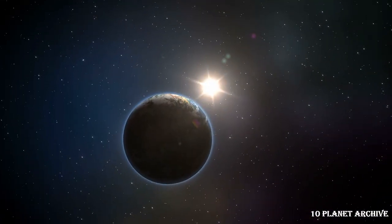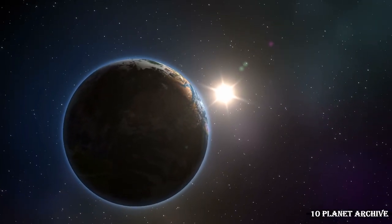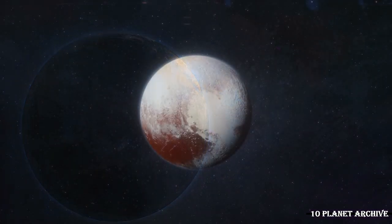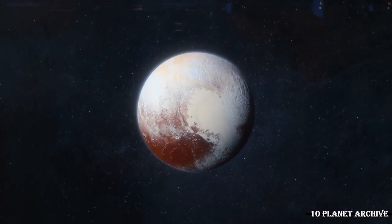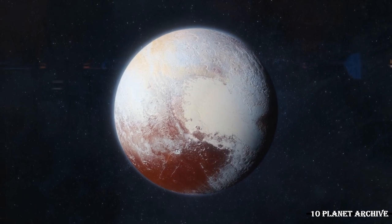One AU is the mean distance between Earth and the Sun, about 93 million miles or 150 million kilometers. But on average, Pluto is 3.7 billion miles, 5.9 billion kilometers, away from the Sun, or 39 AU.